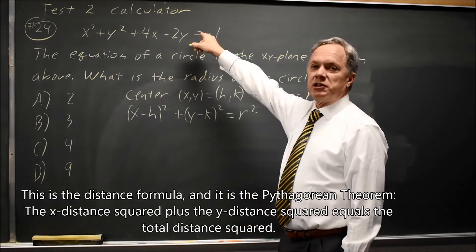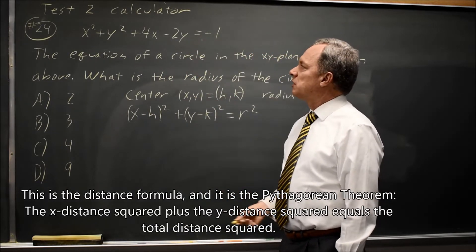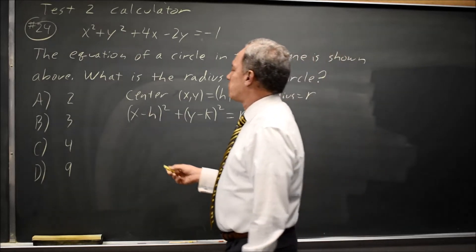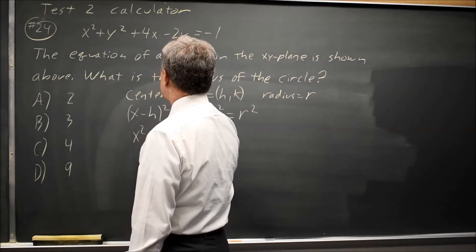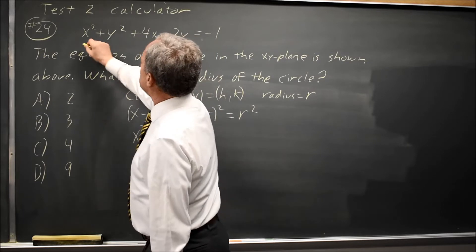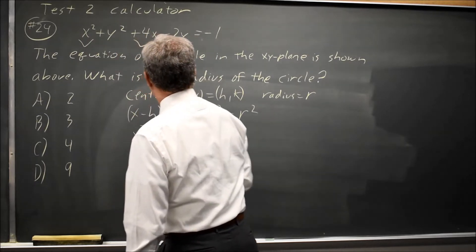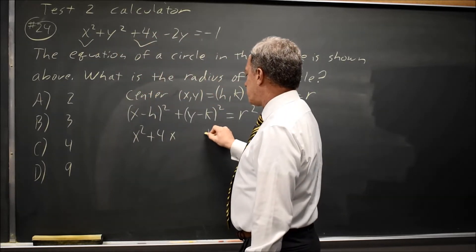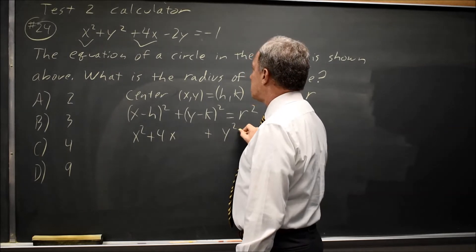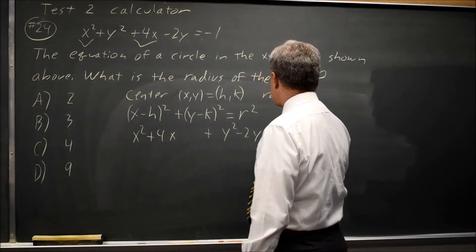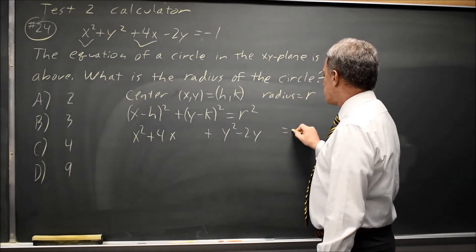They've given us an equation, but it's not in the standard form, so I'm going to complete the square to put it in standard form. I have x squared plus 4x, taking my x terms in sequence. I'll leave a space to complete the square, and then I have plus y squared minus 2y. I'll leave a space to complete that square equals negative 1.